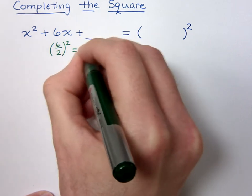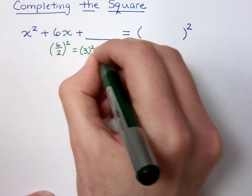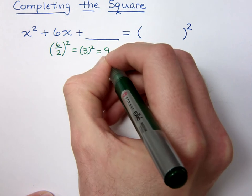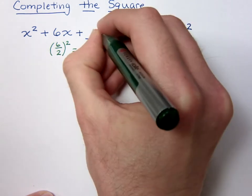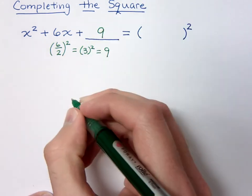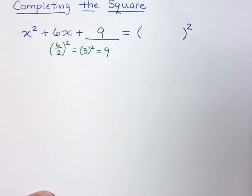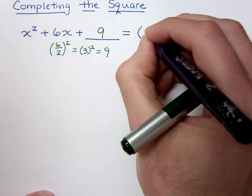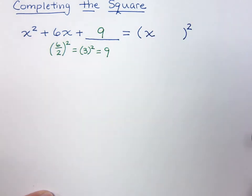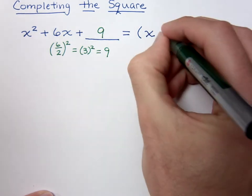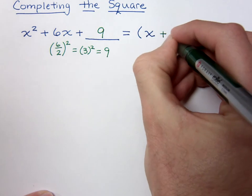So by doing the work, we come up with 3 squared, which equals 9. So this is saying that if I put a 9 here, x squared plus 6x plus 9 will factor. But it will factor very specifically as a binomial square. And the way that it factors is by x plus 3.